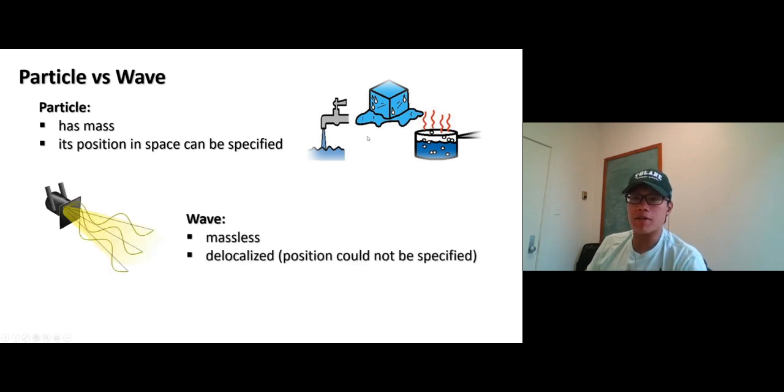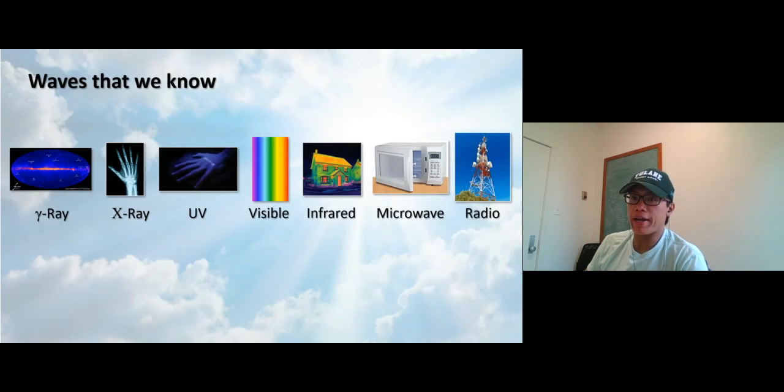In contrast, a wave has no mass and it is delocalized, which means that they don't stay in the same place. Now you can't really, you don't know what it is exactly. Can't specify. And the reason for that is because they move quickly, like at light speed. I mean it's really hard to specify where a wave is.